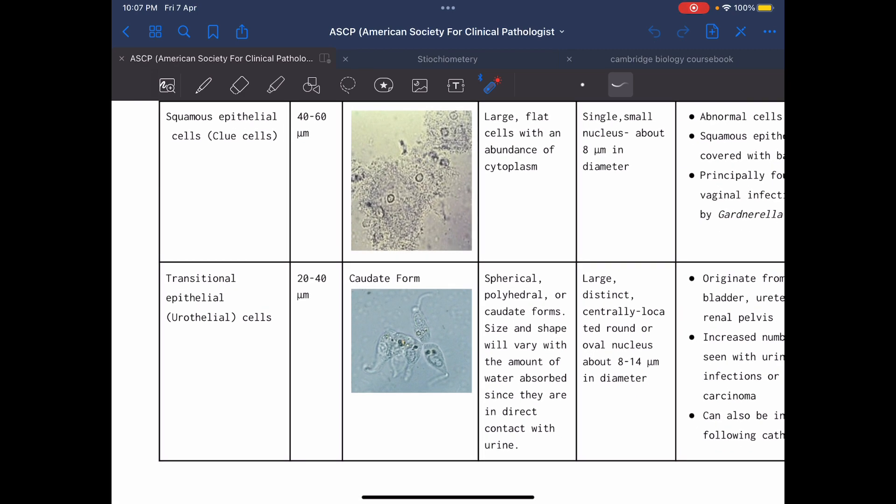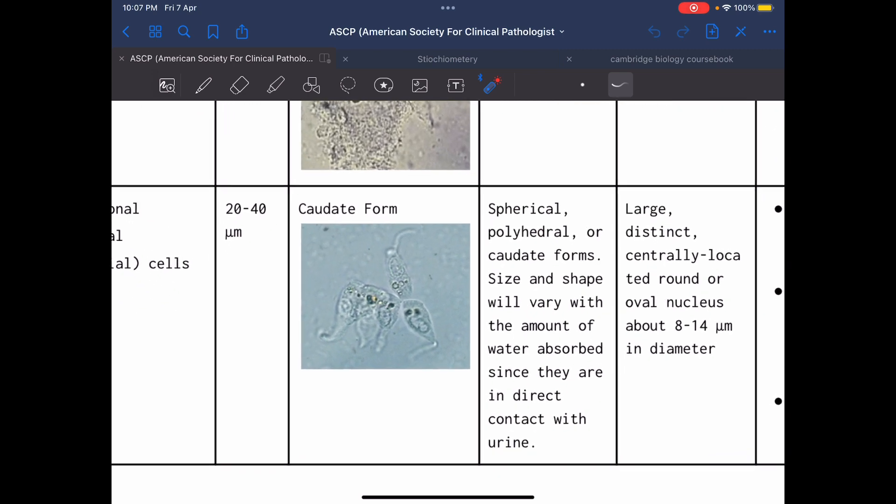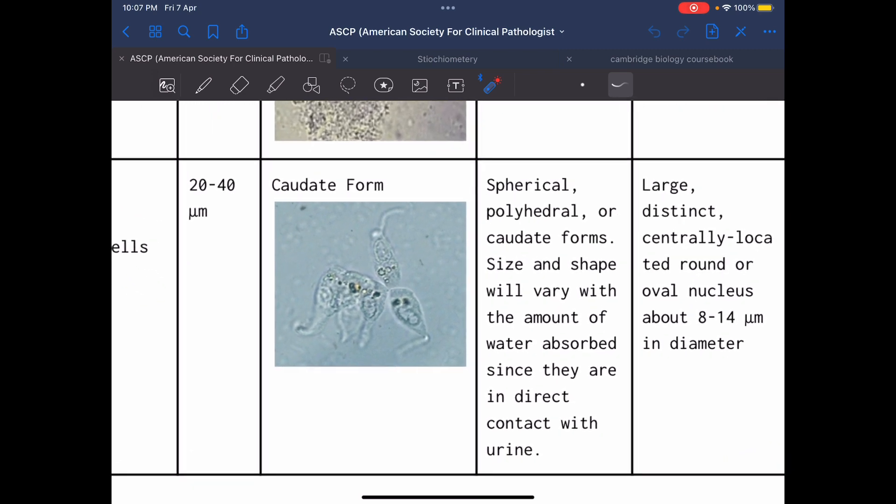The second type is transitional epithelial cells or urothelial cells. There are many forms of transitional epithelial cells. It is smaller than squamous epithelial cells. There are spherical or polyhedral or caudate forms. If we see here, this is the caudate form. As you see, there is a characteristic tail and nucleus here in the center.